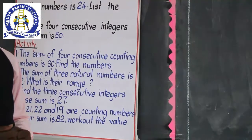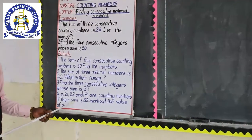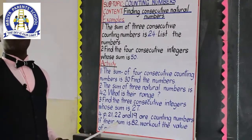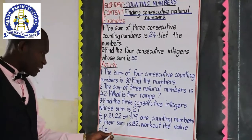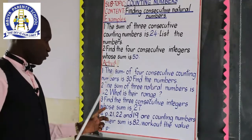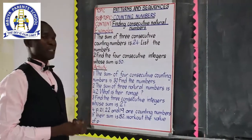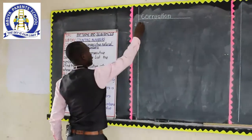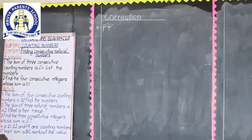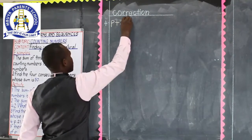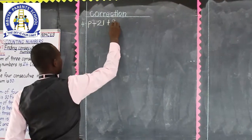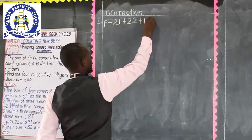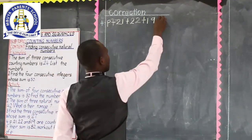So how do you approach such a question? We learned that sum means the result when you add numbers. Since we have been given the sum and one of the numbers needs to be found, what we have to do is first form an equation. We are going to form an equation using the given information. We shall say P, as one of the numbers, plus the second number 21, plus the third number 22, plus the last number 19. When these numbers are added, we come up with 82.